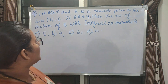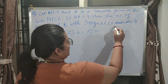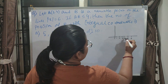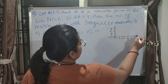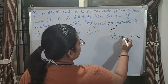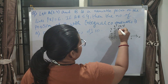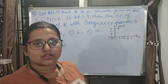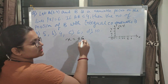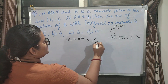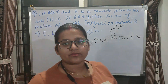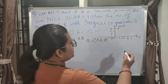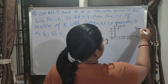First, let me draw a rough diagram. We have point A at (3, 4). B lies on |x| = 6, which means x = +6 or x = -6. Since we have no information about the y-coordinate of B, B's coordinate can be (+6, y) or (-6, y). I am first taking the positive side: B = (6, y).